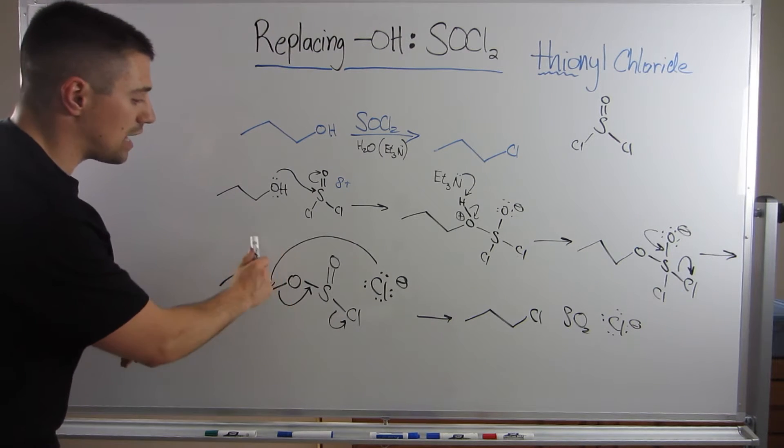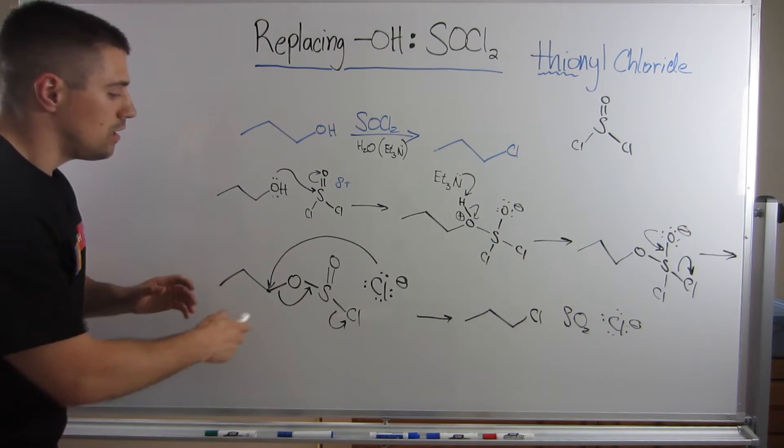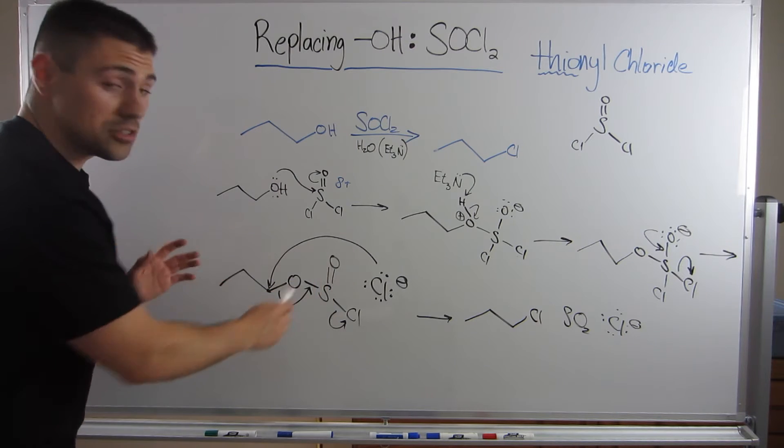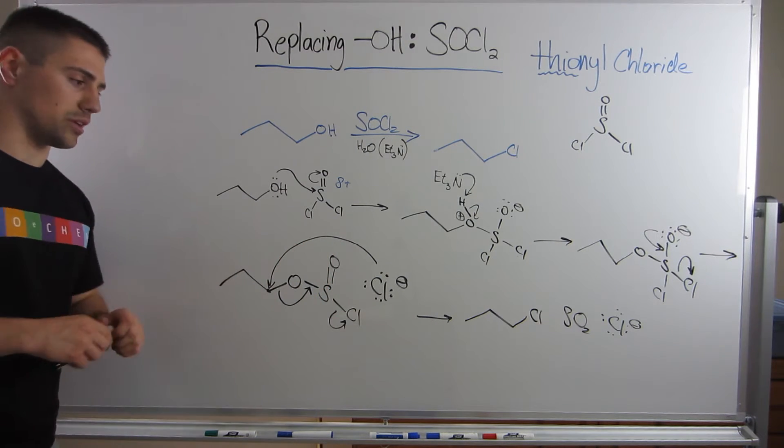That is the chlorine that is going to come back. He comes back. He attacks you because you've now made the oxygen a good leaving group, whatever it's attached to. You swing over electrons. You reform, or you form, sulfur dioxide. And that effectively boots off the other chlorine.